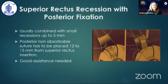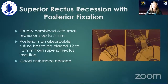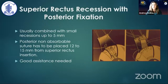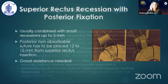Superior rectus recession combined with Faden has also been proposed, first by Kupers — and this is the original drawing from the Kupers paper. A non-absorbable suture is used, placed 12 to 15 millimeters from the superior rectus insertion, which is not a very easy procedure to perform. It needs good assistance, and in my opinion it has not many more advantages than doing a regular large superior rectus recession.